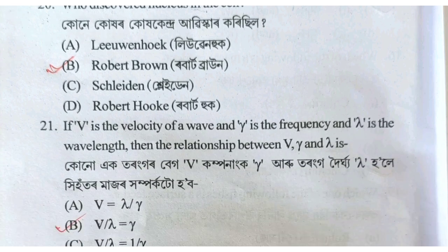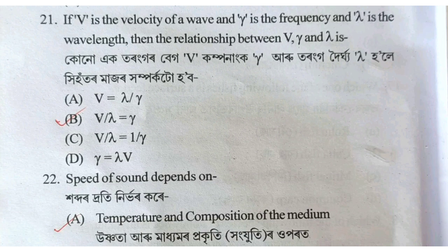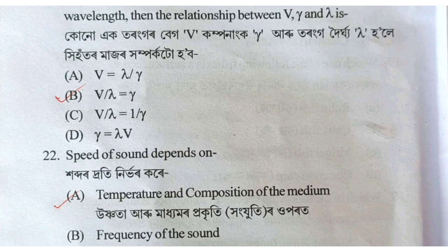If V is the velocity of a wave, gamma is the frequency, and lambda is the wavelength, then the relationship between V, gamma, and lambda is: Option B — V divided by lambda equals gamma.